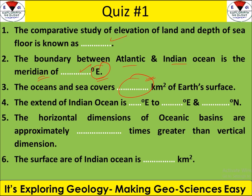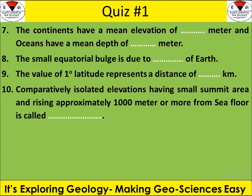You need to identify the value of that meridian dividing the Atlantic and Indian Oceans. Next, how many areas do the ocean and sea cover — sometimes asked in square kilometers or as a percentage. What is the extension of the Indian Ocean in lat-long form? The latitude and longitude ranges are asked, covering from the south pole and equator northward. Also, the horizontal dimension versus the vertical dimension of the oceanic basin is compared.